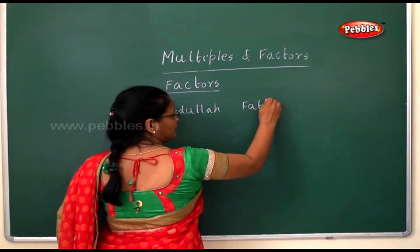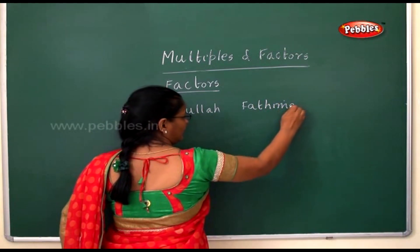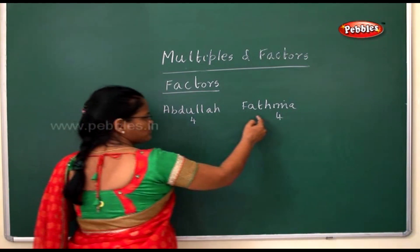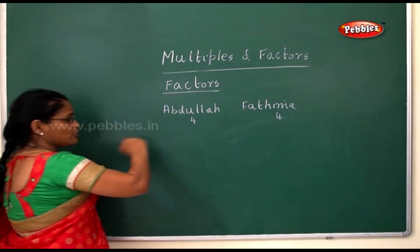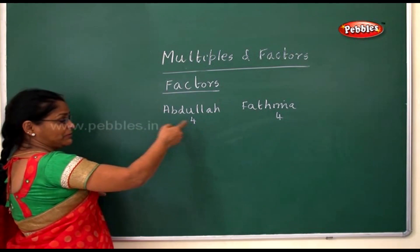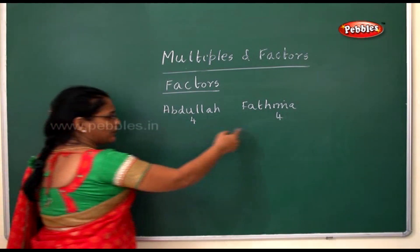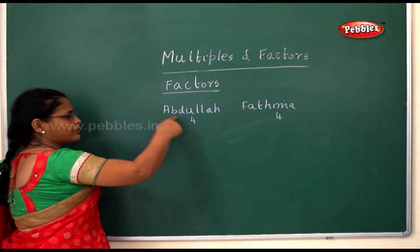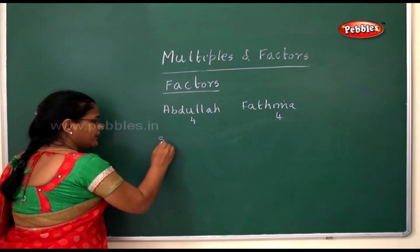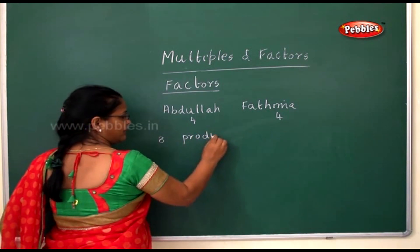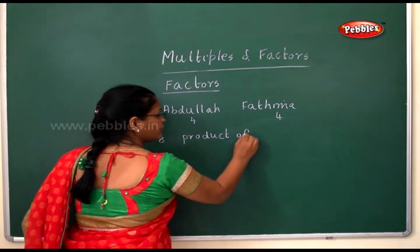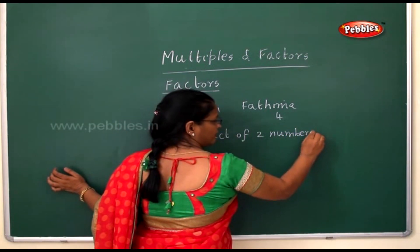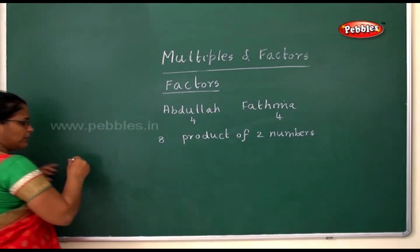Fatima had four cream biscuits and Abdullah also had four cream biscuits. Fatima was very fond of cream biscuits, so Abdullah wanted to tempt her. He said he would give her a biscuit if she could answer a question. The question Abdullah asked was: write eight as the product of two numbers.